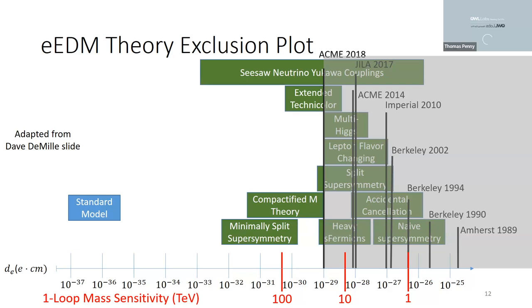The width of the box means the theories give you a range of EDM values they predict rather than a single number. When you rule out most of one of their boxes, they sometimes extend the box — so it's a moving target.